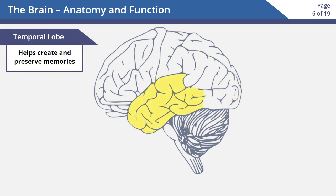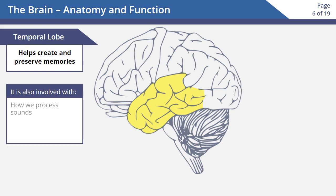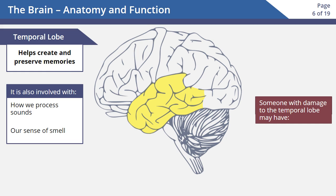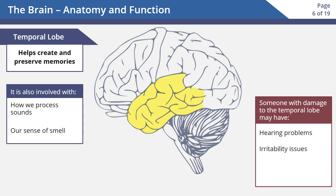The temporal lobe helps us create and preserve our memories. It is also involved with how we process sounds and our sense of smell. Someone with damage to their temporal lobe may have hearing problems, be overly irritable, and have problems with their memory.